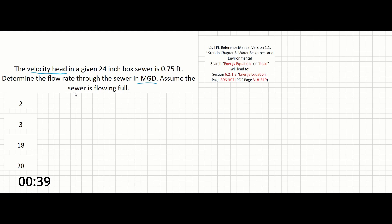Velocity head equals 0.75 feet. The equation for velocity head can be found by searching for the energy equation or head within chapter 6 of the reference manual. We can see that this equals v squared over 2g, where v is your velocity and g is the acceleration due to gravity.